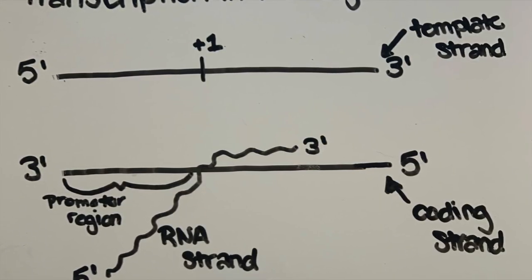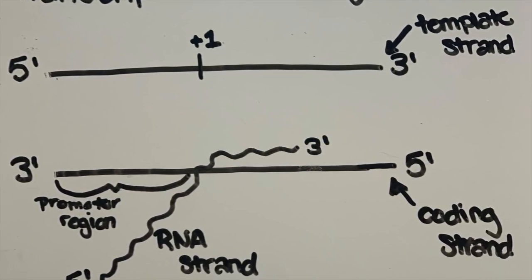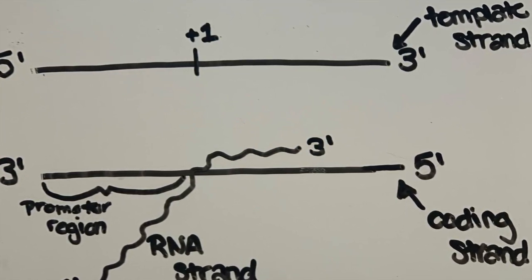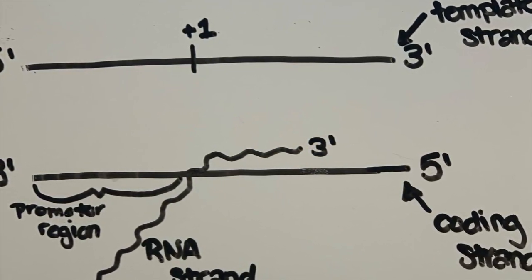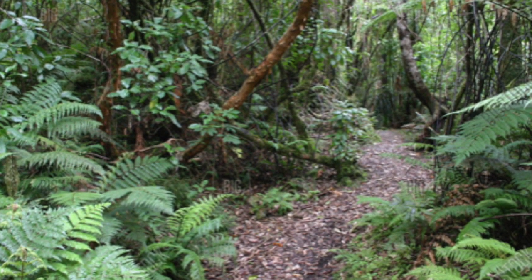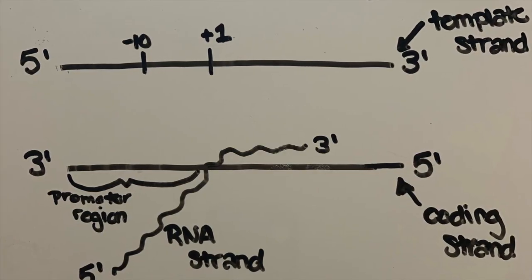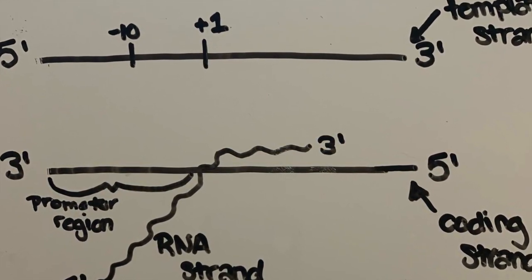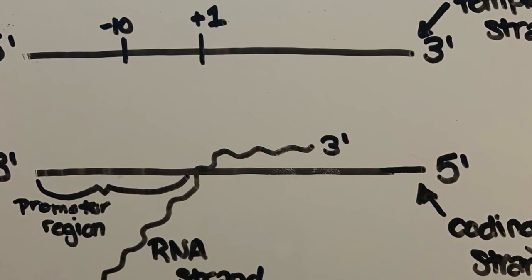The promoter region contains several sequences that allow RNA polymerase to bind. The +1 nucleotide is the first transcribed base. If we move upstream closer to the promoter region, we reach the -10 consensus sequence, which is important to allow RNA polymerase to bind during this process.